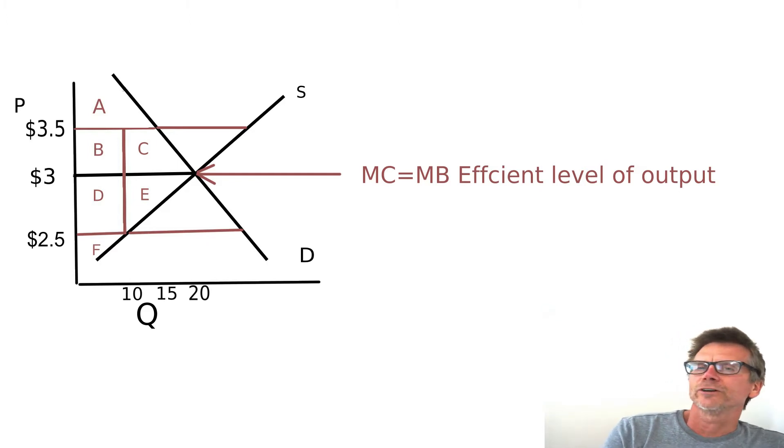And in this next diagram, I'm breaking it up into alphabetical triangles and squares, which we're going to subsequently calculate. But the main point in this is you've got marginal cost equals marginal benefit at efficient level of output.